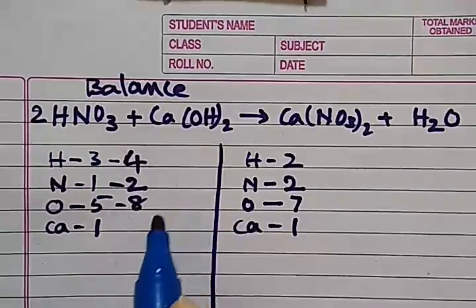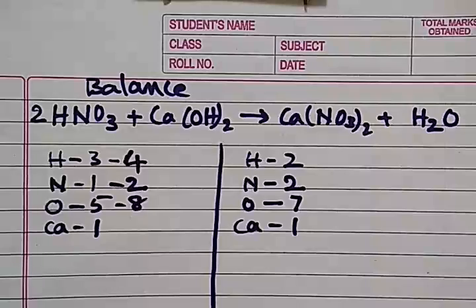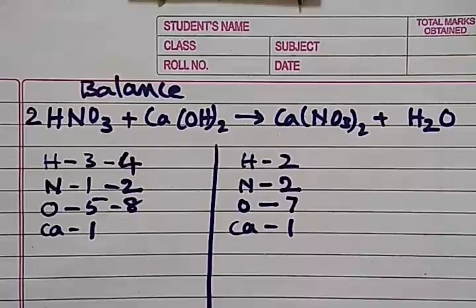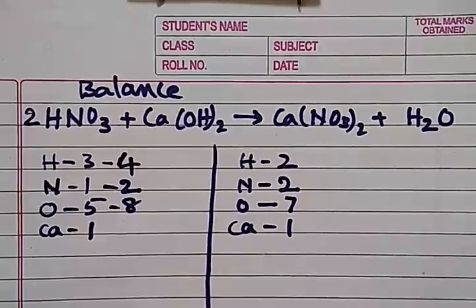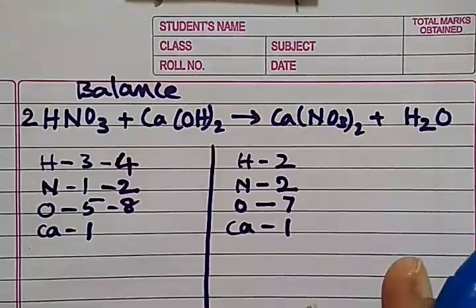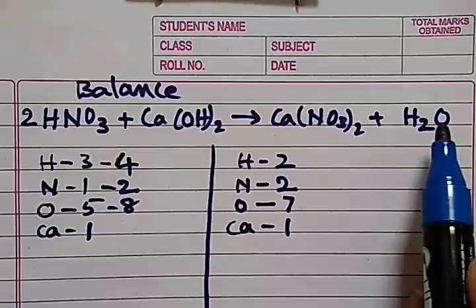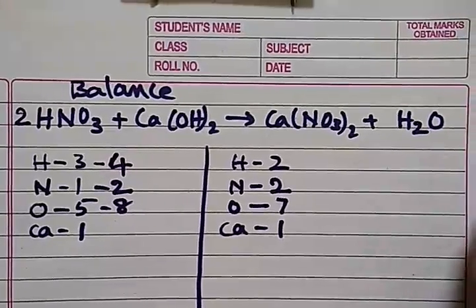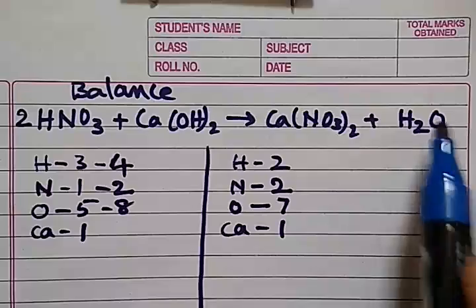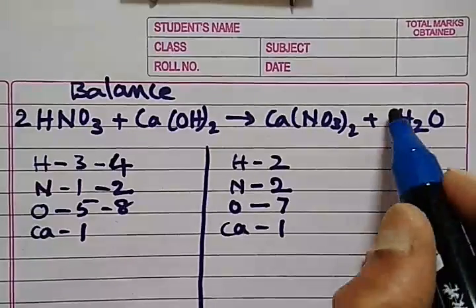So oxygen and hydrogen is not balanced. So what you have to do, we will double this so that hydrogen become four. But here there is no hydrogen, and oxygen now two plus six it has become eight.